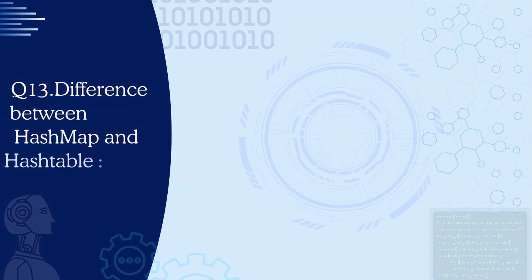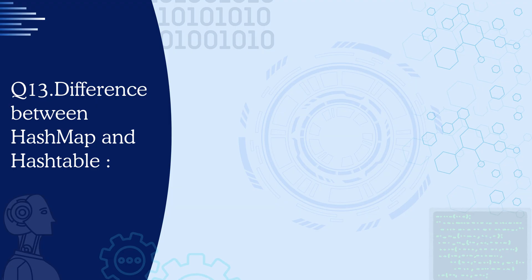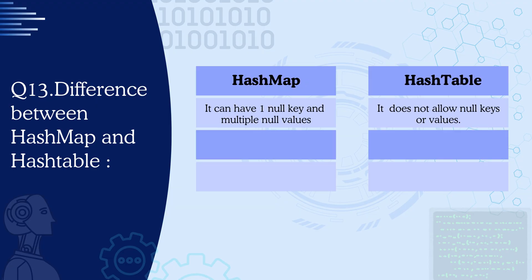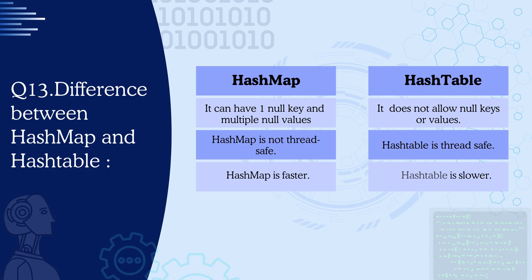Question 13: What is the difference between HashMap and HashTable? HashMap can have one null key and multiple null values, whereas HashTable does not allow any null keys or null values. HashMap is not thread safe, but HashTable is thread safe. HashMap is faster and HashTable is slower.